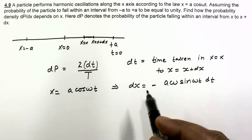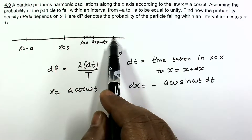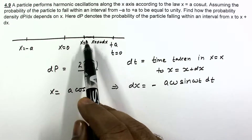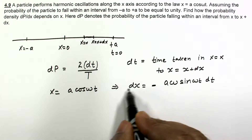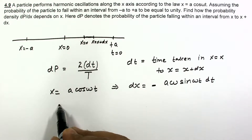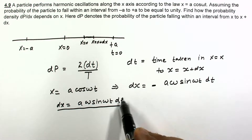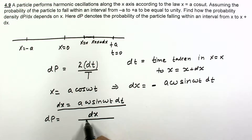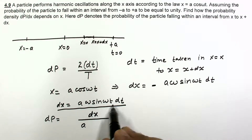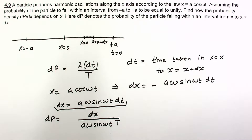This minus sign just represents that the x coordinate is decreasing in that direction. Since at t equals 0 the particle is at plus a and moves toward minus a, the x coordinate decreases — so we take the magnitude. The magnitude of dx will be a·ω·sin(ωt)·dt, and so dt equals dx divided by a·ω·sin(ωt). Substituting into dp, with capital T being the time period.